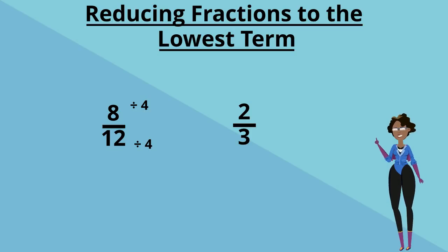And two-thirds cannot be reduced any smaller because there is no other number that can be divided into 2 and 3 without any remainders.